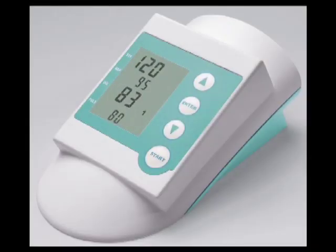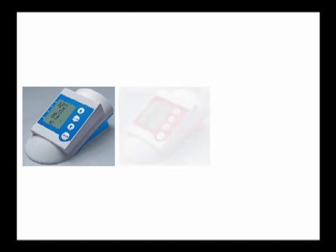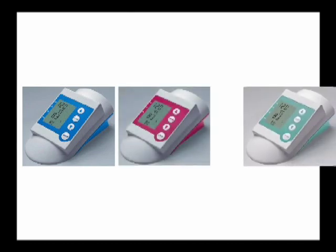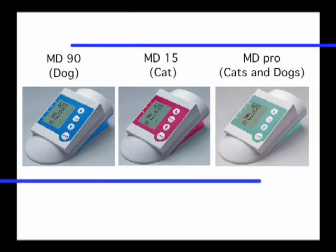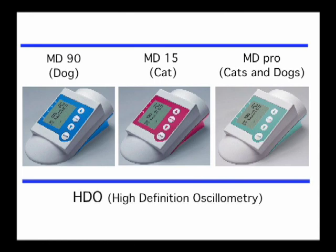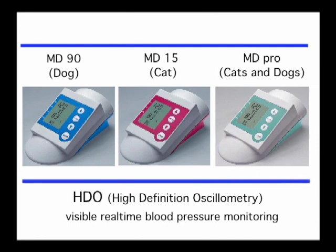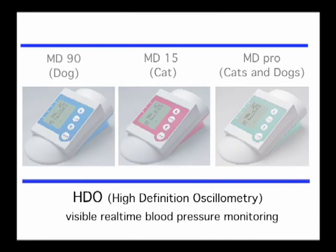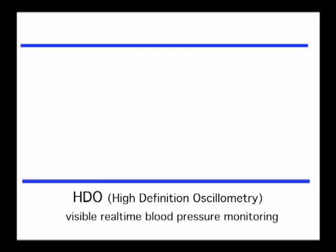This is an HDO unit. High-definition oscillometry is the newest generation of blood pressure measurement devices. It's the first technology offering accurate readings in all pressure ranges. HDO provides visible, real-time measurement and allows detection of even the smallest amplitudes, changes in cardiac output as seen in arrhythmias, and extremely rapid pulse rates.